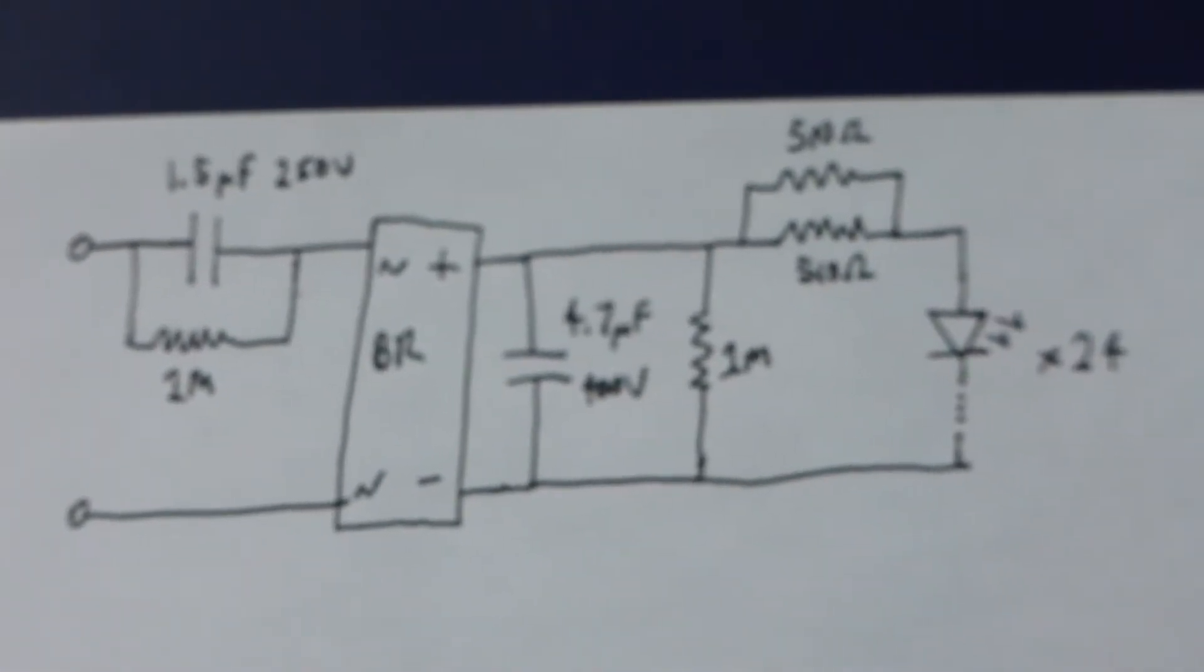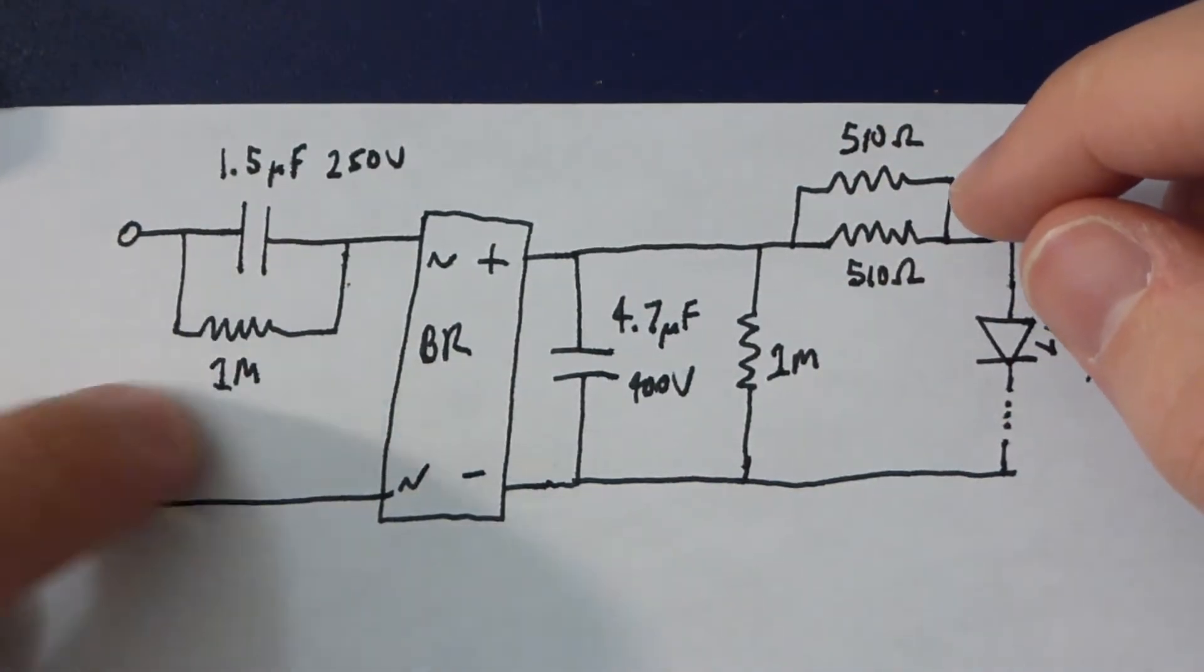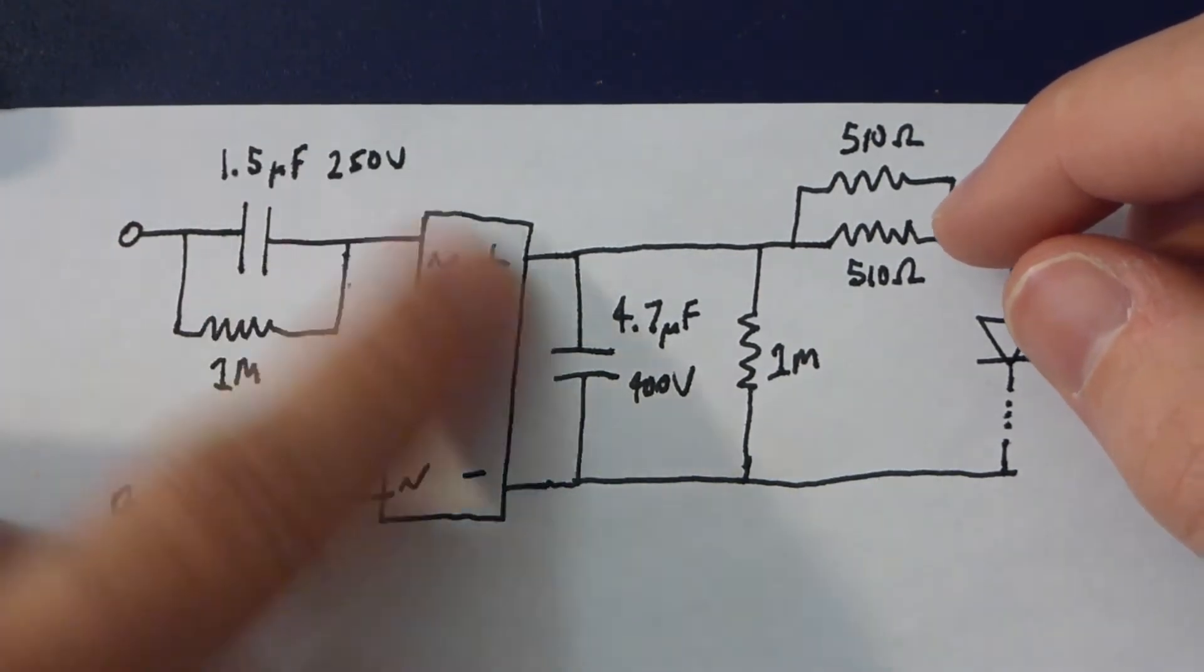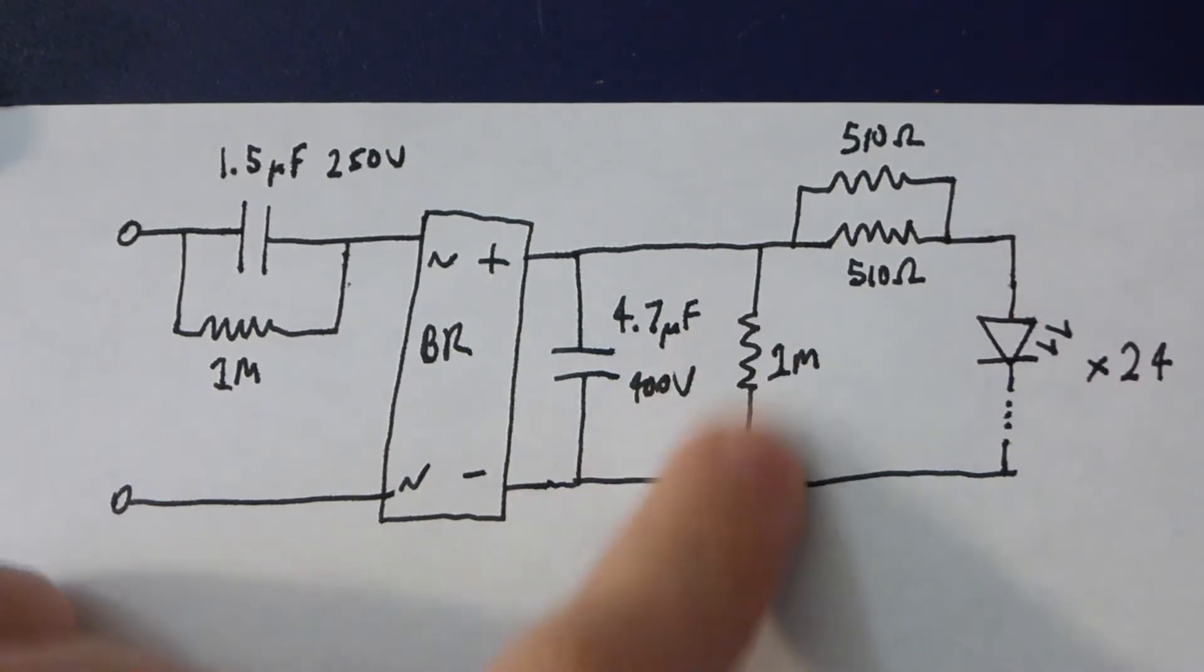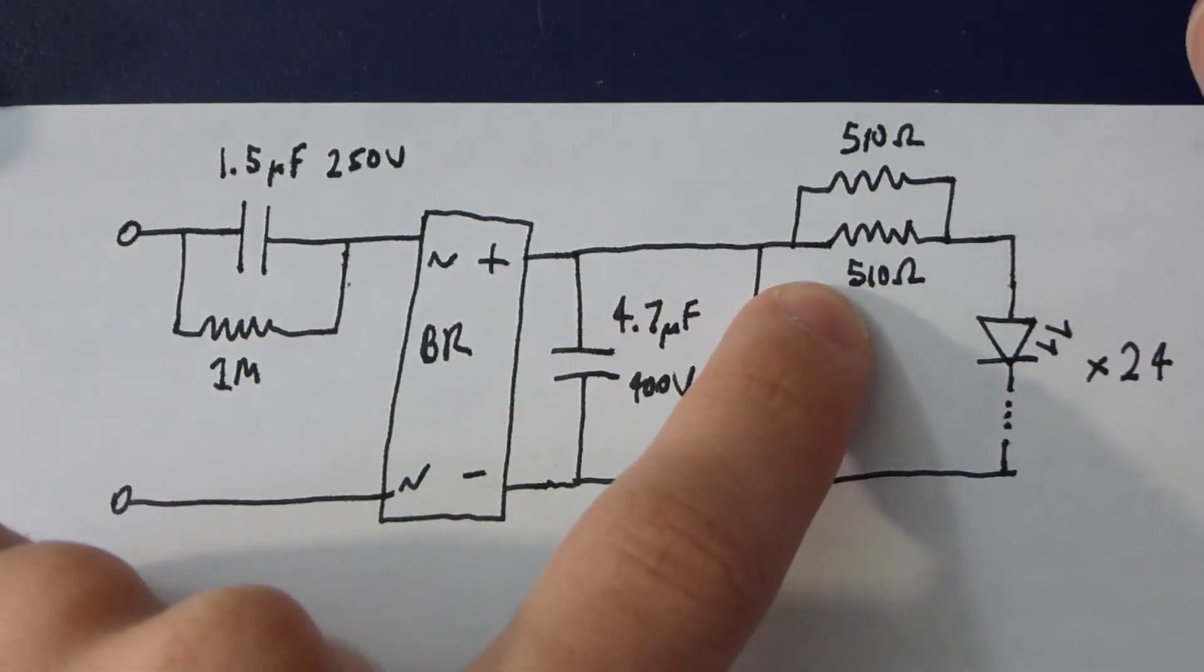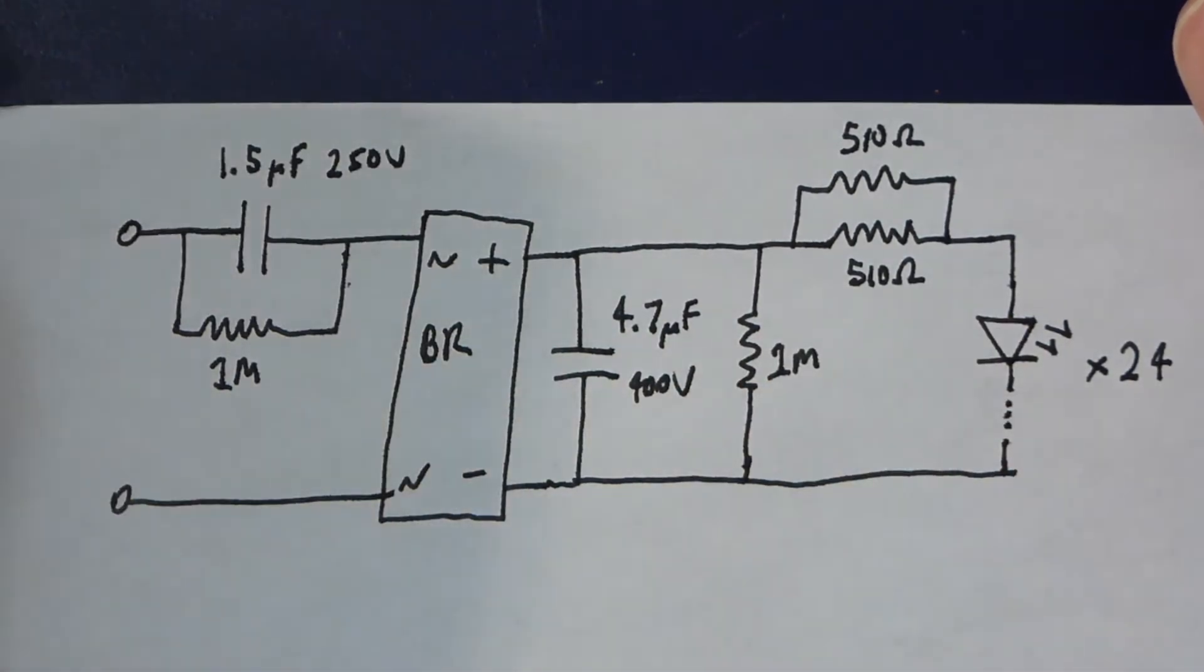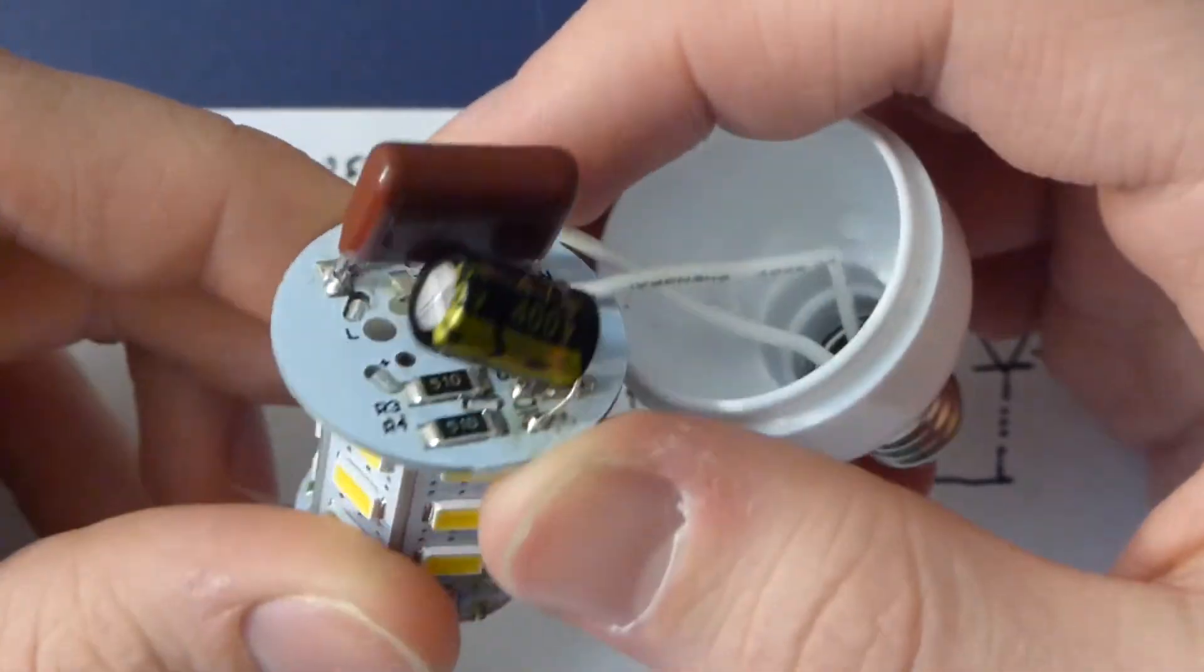Everything else is wired in series. Rather than me talking about it, I just drew it out. So the power comes in, we have our bleed resistor across this particular dropping capacitor. It is a single chip bridge rectifier. We have our smoothing capacitor, another bleed resistor across that, and then our two current limiting resistors in parallel. The 24 LEDs are wired in series. So all in all, it's actually not that bad construction given how cheap they were.